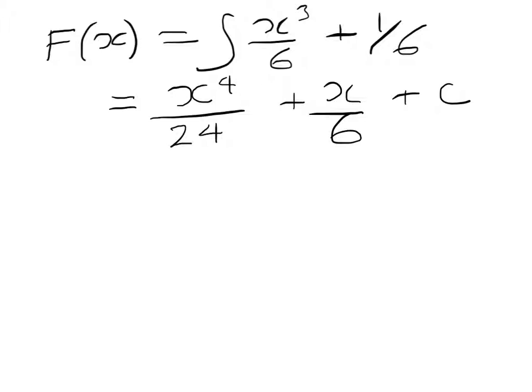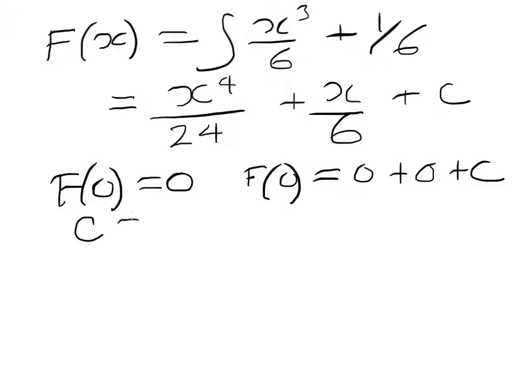Now to find the constant of integration, I'll use the fact that F of 0 equals 0. So F of 0 will equal 0 to the power 4 over 24, which is 0, plus 0 over 6, which is 0, plus c. So we can see then that c equals 0.